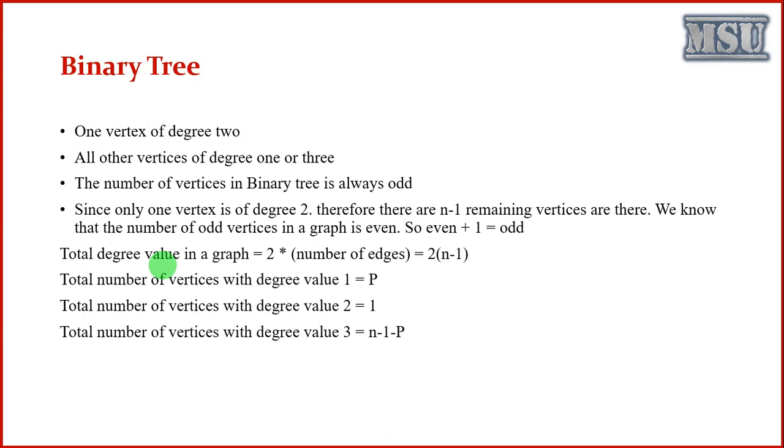From the rooted tree, we are defining a binary tree. In a binary tree, one vertex is of degree 2, which is actually a root node. All the other vertices are of degree 1 or 3. The number of vertices in a binary tree is always an odd number. This is one of the important properties.